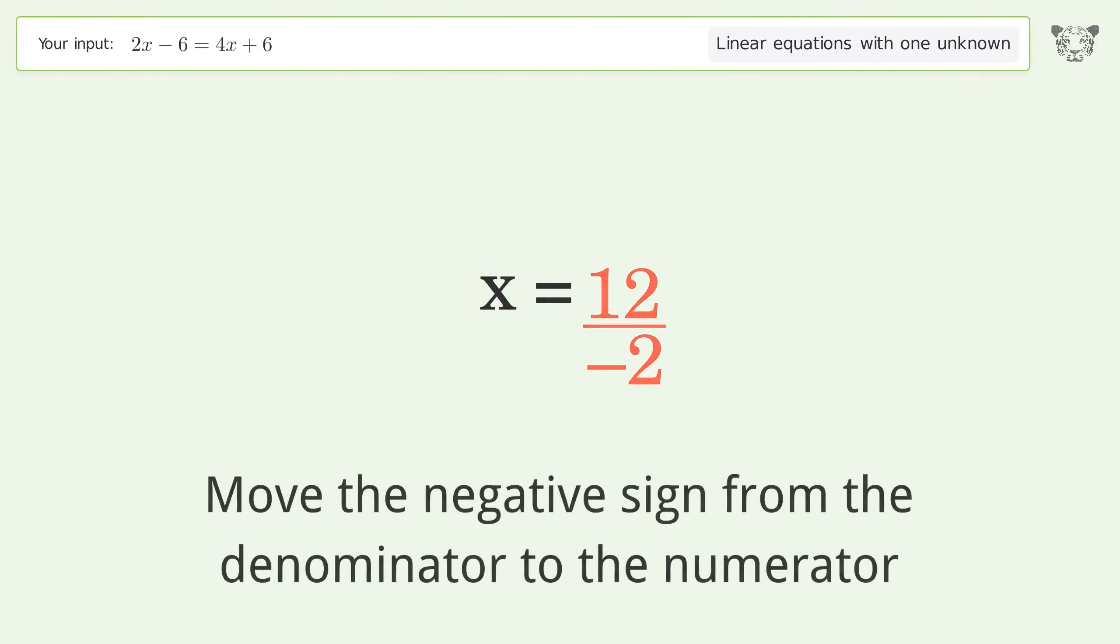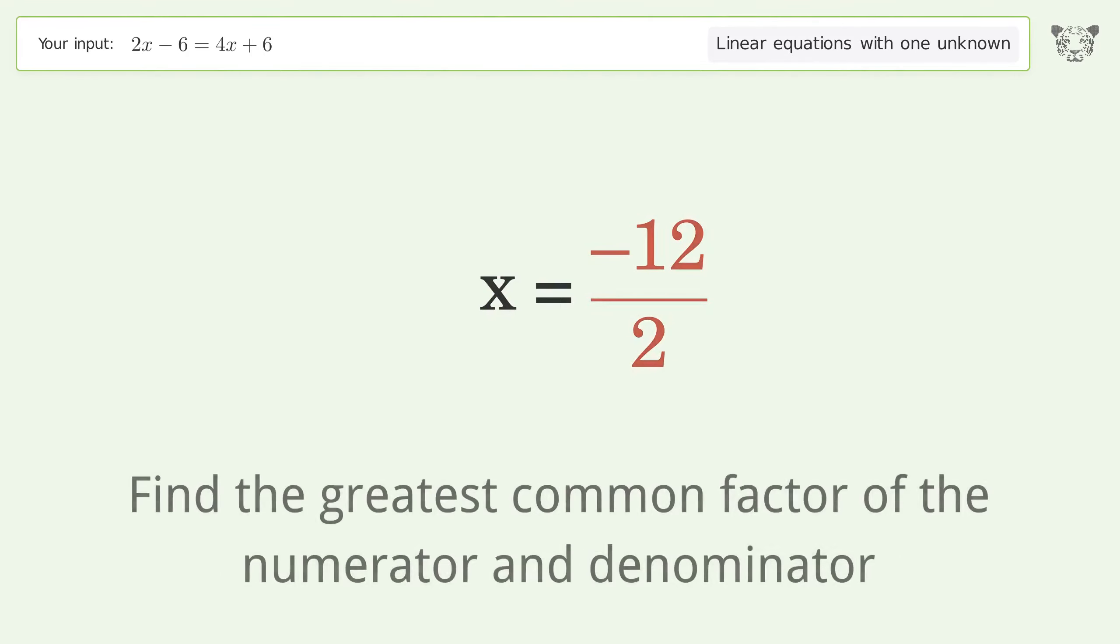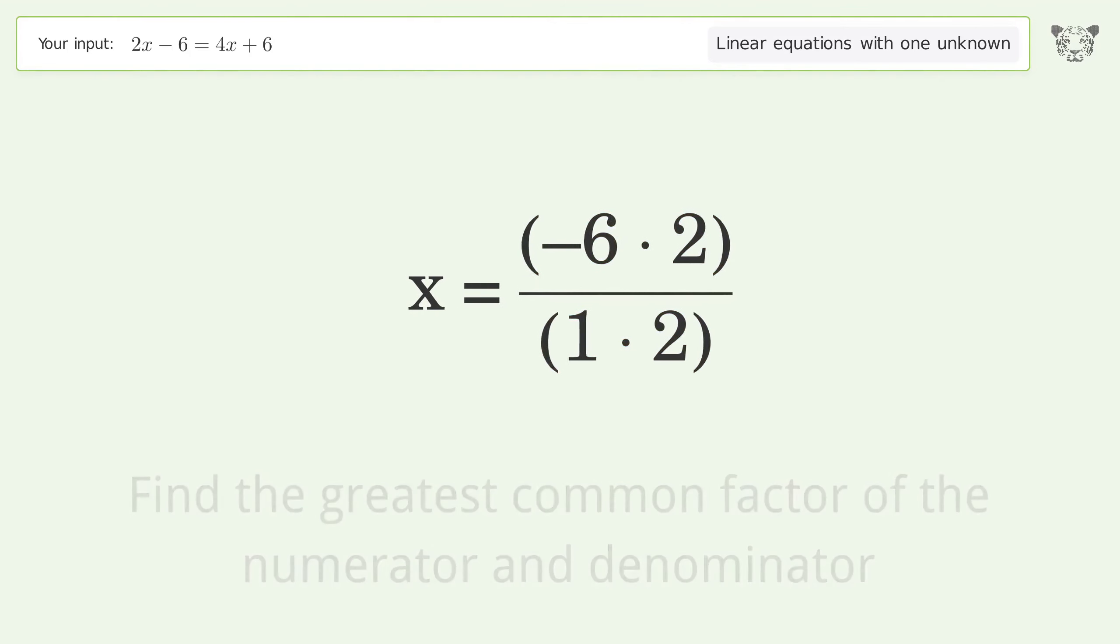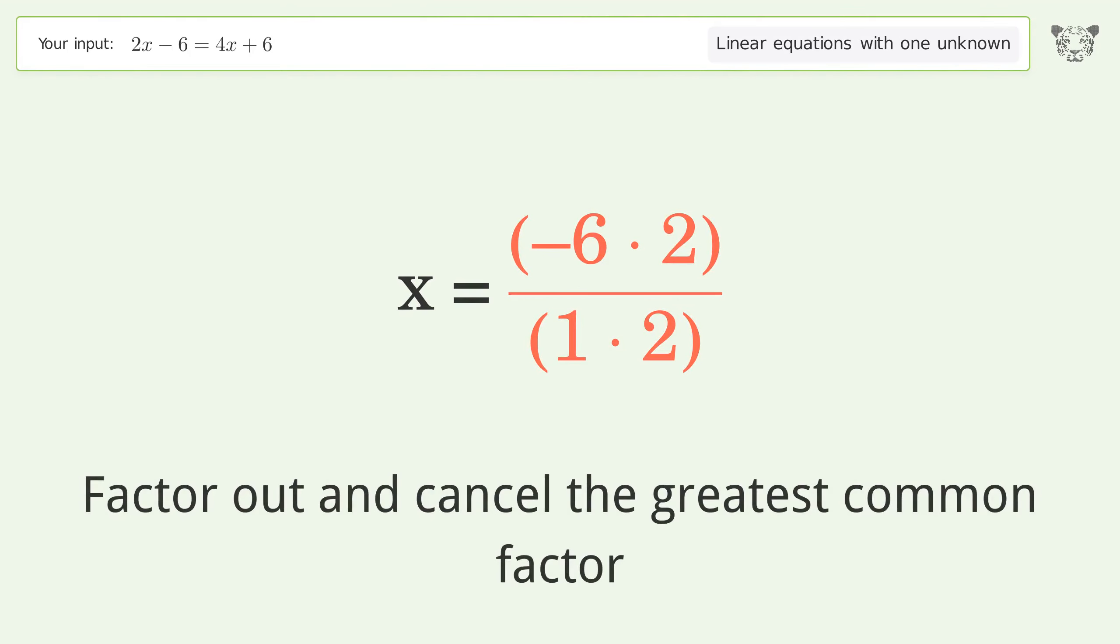Move the negative sign from the denominator to the numerator. Find the greatest common factor of the numerator and denominator. Factor out and cancel the greatest common factor.